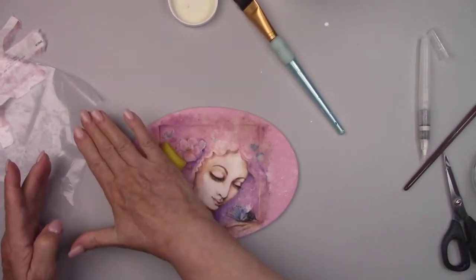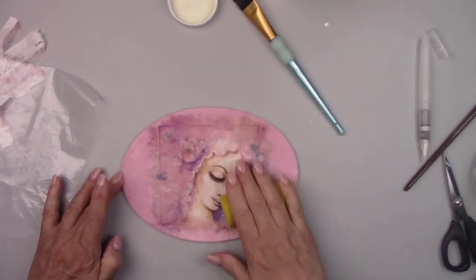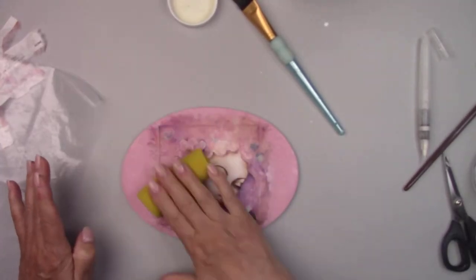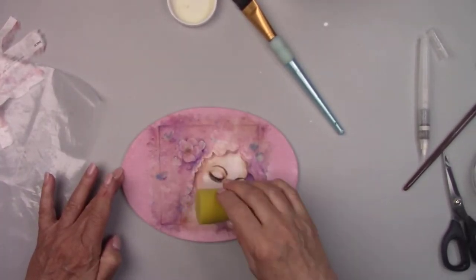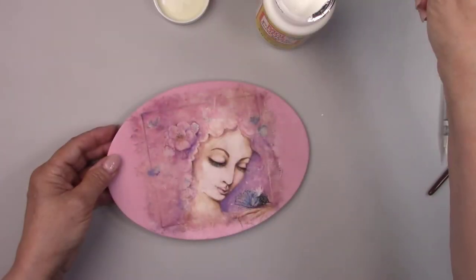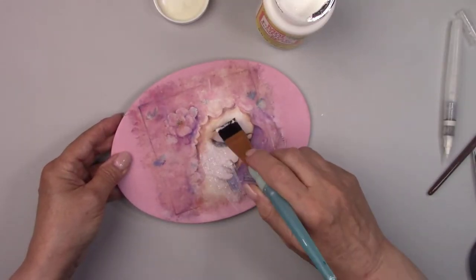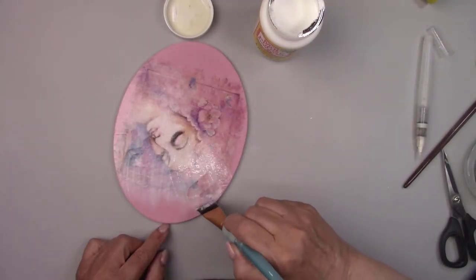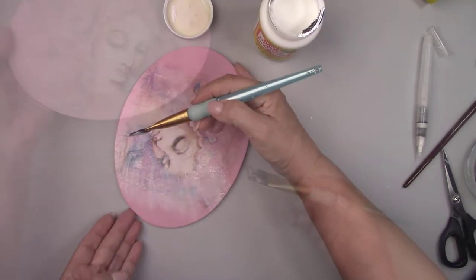I'm rolling out the picture with a sponge to make sure there are no air bubbles under the picture. I'll let this dry for a few hours and then add a coat of Mod Podge over the entire picture to seal it. Let's move on to method number two.